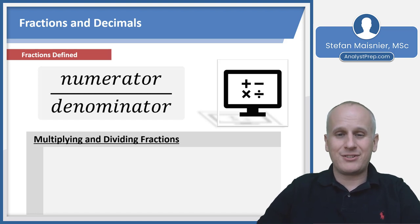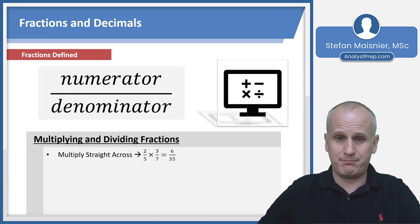When multiplying or dividing fractions, it's generally easier. You can multiply straight across. Two fifths times three sevenths is six thirty-fifths because two times three is six, five times seven is 35. You don't need a common denominator, just multiply straight across.